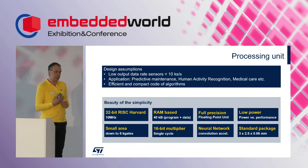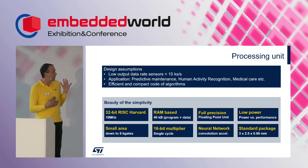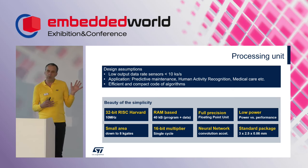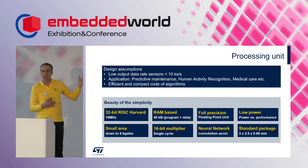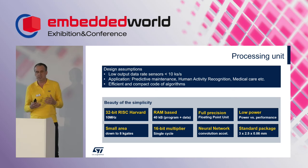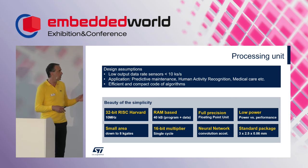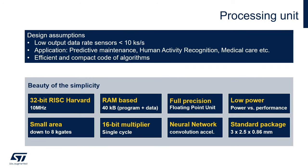What are the design assumptions for this use case? We targeted this solution for low output data rate sensors — below 10 kilobits per second, so MEMS is a good example. The application area is mainly predictive maintenance, for example vibration detection, anomaly detection or prediction, human activity recognition, wearables, medical care, fall detection, et cetera. Because we are limited in resources, we must follow an efficient and compact code programming approach. The companion processing unit is really simplified but still functional.